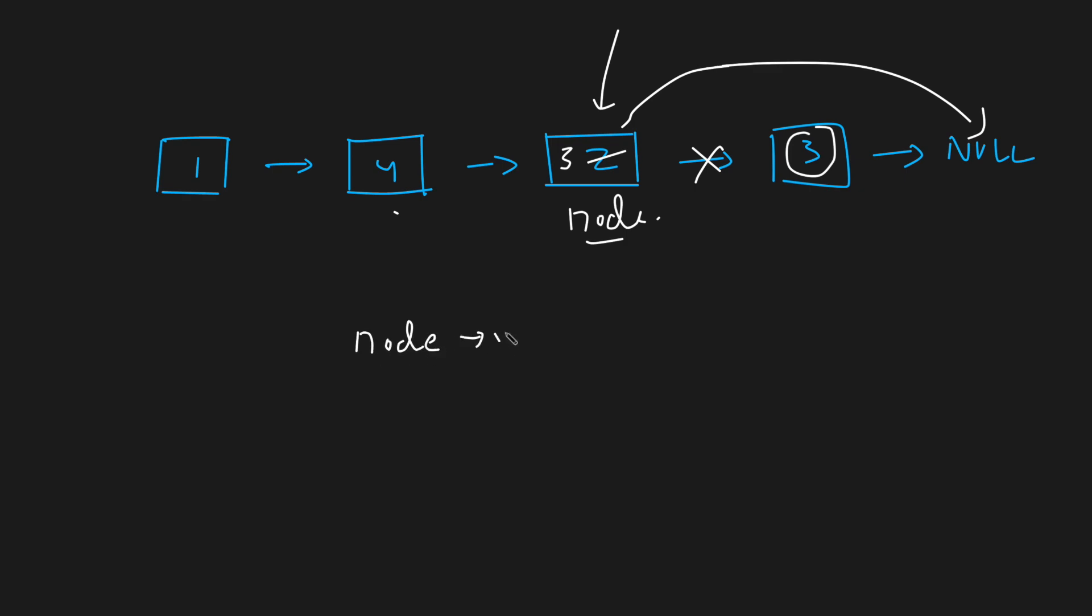What you do is you take the node's val, assign it to node's next val. Now why does node's next val work? Because they have clearly told you that node will never be the tail node, that is the last node. That is why node next is for sure a node and you can simply take the val.